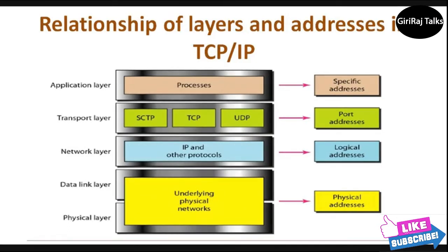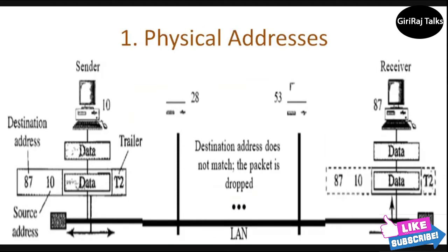First is physical addresses, also known as the link address — the address of a node by its LAN (local area network) or WAN (wide area network). It is included in the frame used by the data link layer. It is the lowest level address, and physical addresses have authority over the network, whether LAN or WAN. The size and format of these addresses vary depending on the network.